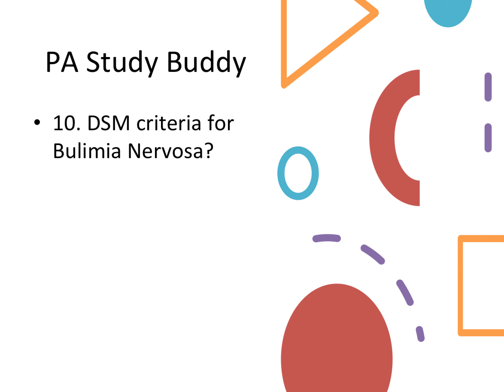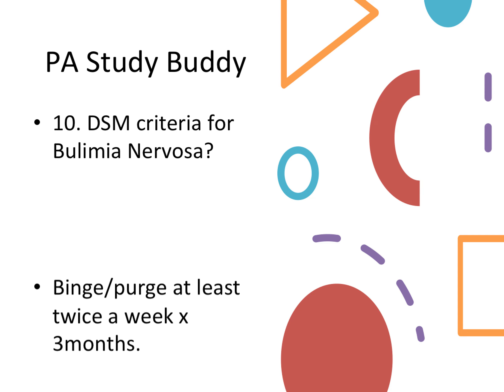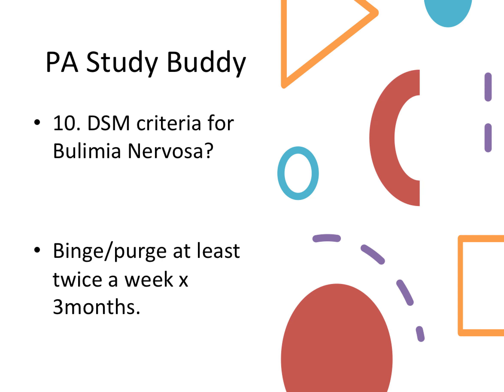Question ten: DSM criteria for bulimia nervosa. They'll give you different choices, and it's going to be binge and purge at least twice a week for three months. They'll ask how often symptoms must be present to diagnose bulimia — options like twice a week for a week, twice a week for a month, or four times a week for a month. The answer is twice a week for three months.